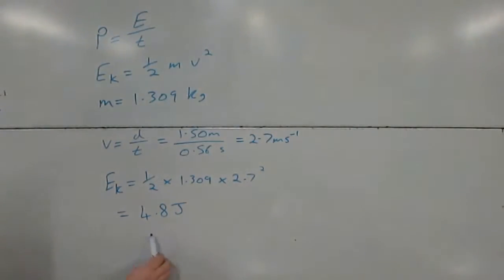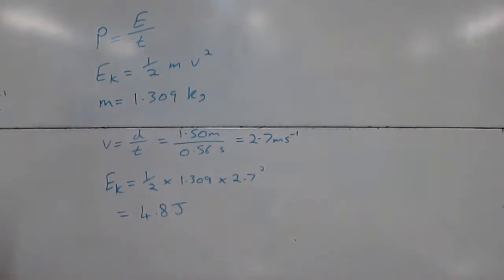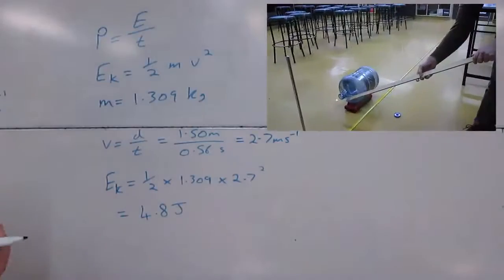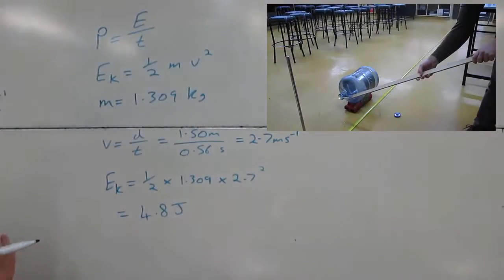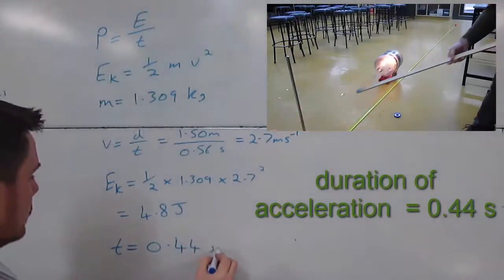We can now use this value to work out the power, as long as we know the time over which the energy was transferred. The time that the energy was transferred was the period during which the rocket accelerated, and that was 0.44 seconds.